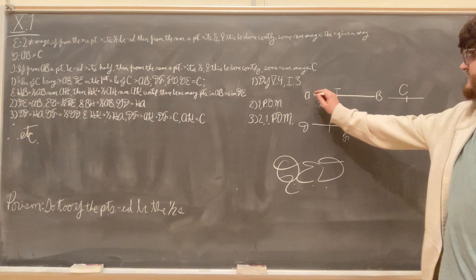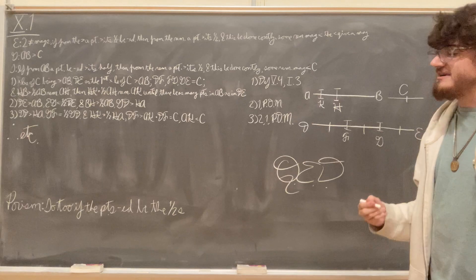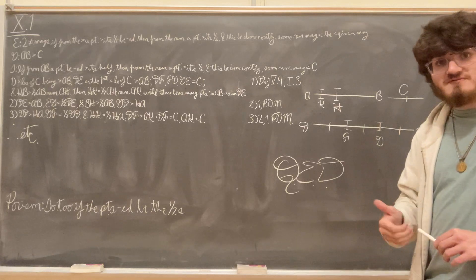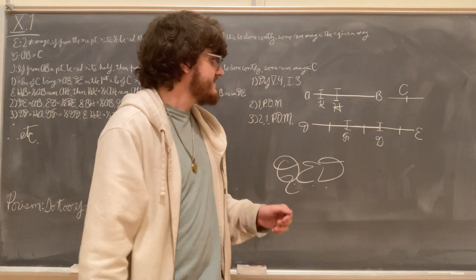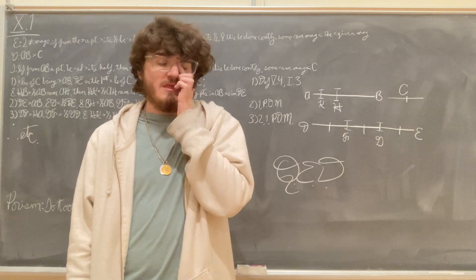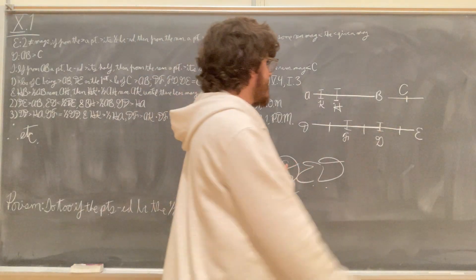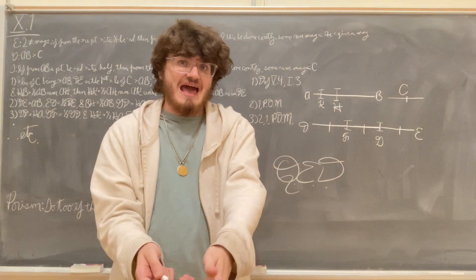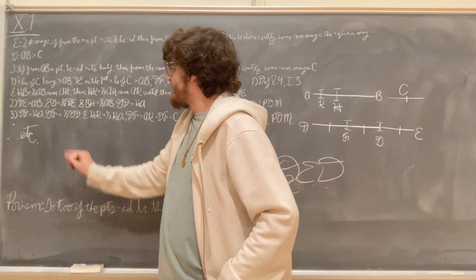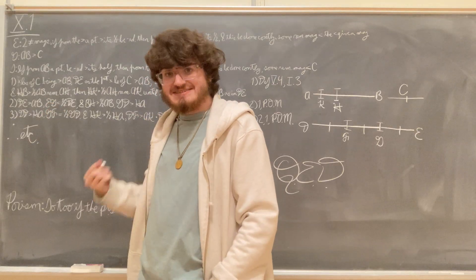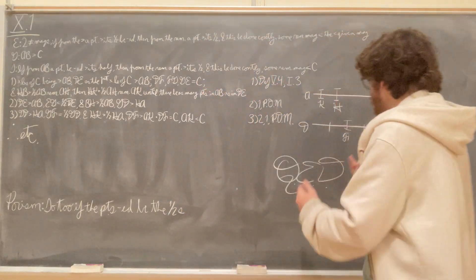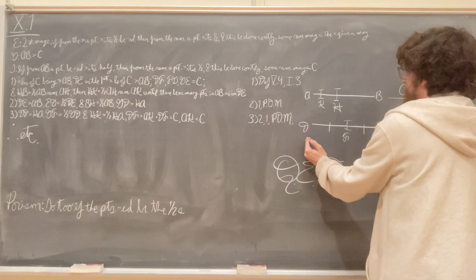Since DE is greater than AB — that's how we made DE in our first step — and EG is less than half of DE (in this particular case EG is a third of DE, so it's obviously less than half), but on the contrary, BH is greater than the half of AB. It then follows from all three of these facts — that DE is greater than AB, that we cut off EG less than its half from DE, and BH greater than its half from AB — that the remainder GD is greater than the remainder HA.